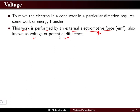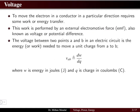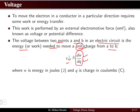EMF is also known as the voltage or the potential difference. So the different names — potential difference, voltage, and EMF — all have the same meaning. The voltage between two points A and B in an electric circuit is the energy or work needed to move a unit charge from A to B. The voltage is given by the rate dW/dQ.